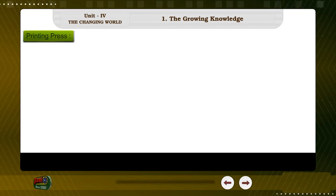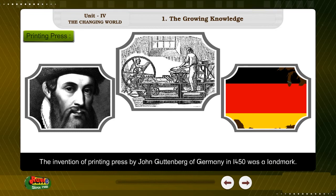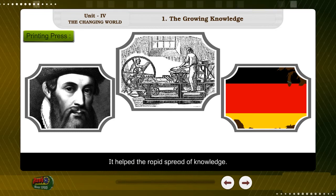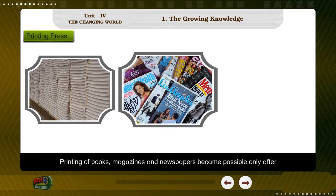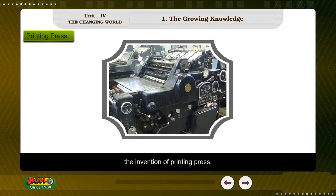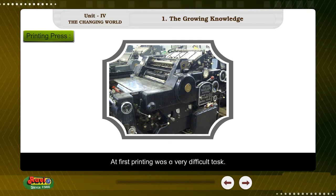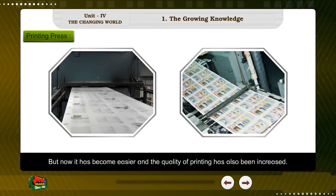The invention of the printing press by Johannes Gutenberg of Germany in 1450 was a landmark. It helped the rapid spread of knowledge. Printing of books, magazines, and newspapers became possible only after the invention of the printing press. At first, printing was a very difficult task, but now it has become easier and the quality of printing has also increased.